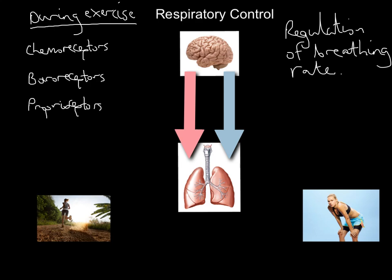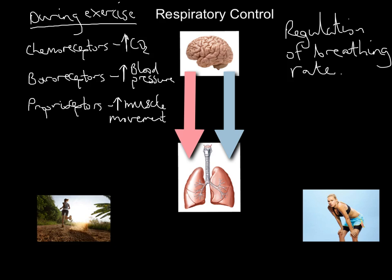Chemoreceptors detect changes in CO2 levels, baroreceptors detect changes in blood pressure, and proprioceptors detect changes in muscle movement or muscle tension. During exercise, chemoreceptors detect an increase in CO2, baroreceptors detect an increase in blood pressure, and proprioceptors detect an increase in muscle movement. This makes sense — when the heart needs to beat faster it needs to deliver more oxygen to the working muscles, and to get more oxygen into the body in the first place you increase your breathing.